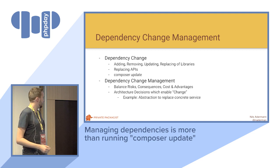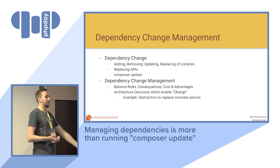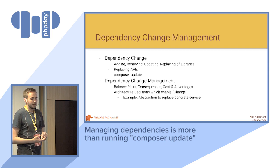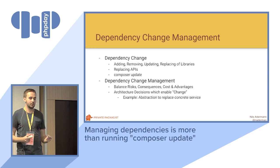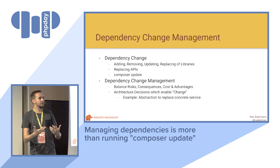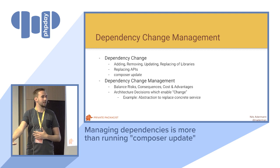This is about balancing the risks — is it worth updating to this new version, should we be using this other library, should we be adding this new dependency? To figure out what are the consequences, the costs, the advantages, but also to make architectural decisions that enable change. For example, create some kind of abstraction layer for a library that's interfacing with a service so that you can later on replace that service. Managing change begins with adding a new dependency and already considering whether you may have to change it later on.